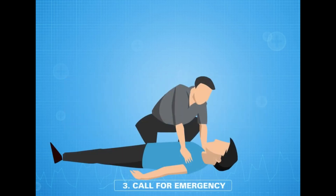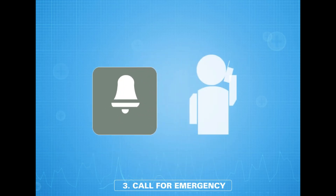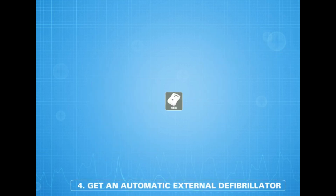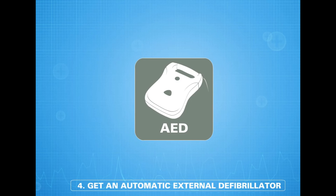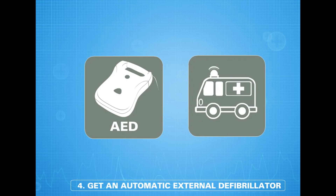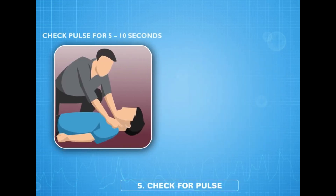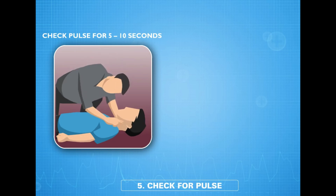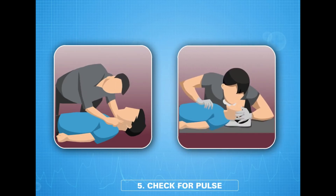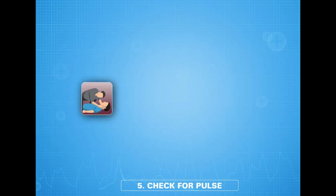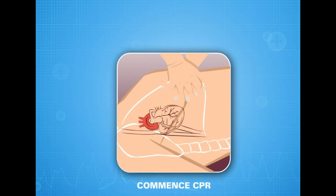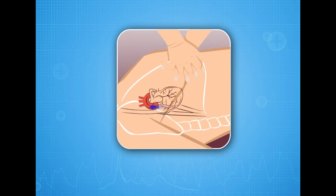Three: if the casualty is not breathing normally, raise an alarm and call emergency services immediately. Four: get an AED — automatic external defibrillator — as soon as possible if available, or ask the ambulance to bring one. Five: check the carotid pulse for no more than 10 seconds. If you find a pulse, support the casualty with rescue breaths. If you cannot find the pulse within 10 seconds, commence CPR immediately.